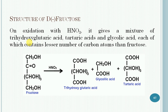On oxidation with nitric acid, fructose gives a mixture of trihydroxyglutaric acid, tartaric acid, and glycolic acid, each of which contains fewer carbon atoms than fructose. This shows that the carbonyl group present in fructose must be ketonic.